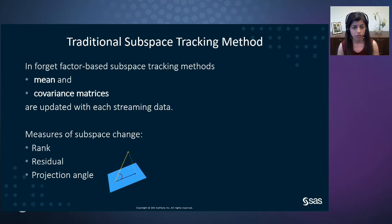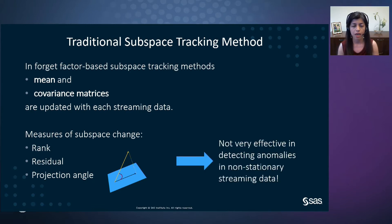A large projection angle can indicate that the entering observation is an anomaly. However, as we are going to demonstrate shortly, many times tracking the rank or the other traditional measures doesn't show the actual change in the subspace. Also, sometimes a relatively larger projection angle can be the result of noise. So tracking these traditional measures may not capture subspace change in the case of non-stationary IoT data.